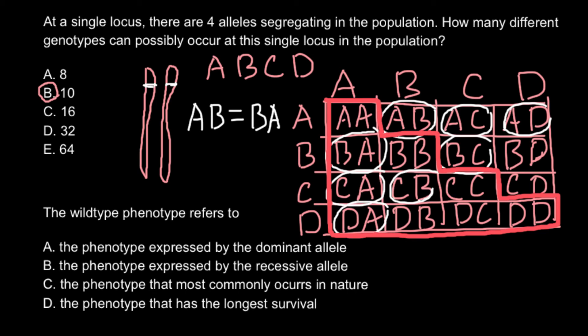And answer C: the phenotype that most commonly occurs in nature. And answer D: the phenotype that has the longest survival. And the correct answer would be answer C, the phenotype that most commonly occurs in nature. This is the correct answer, you just have to remember it.